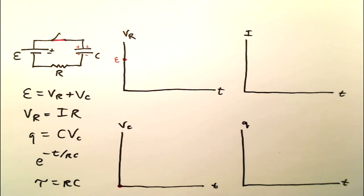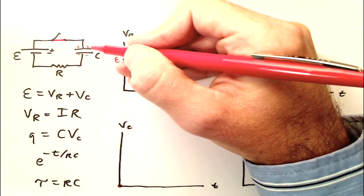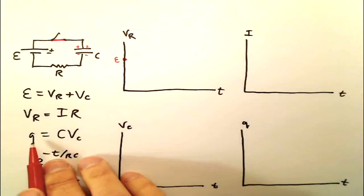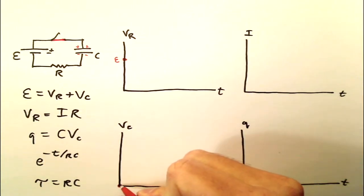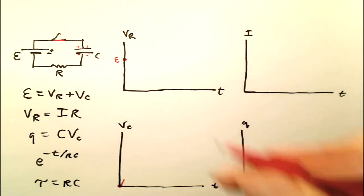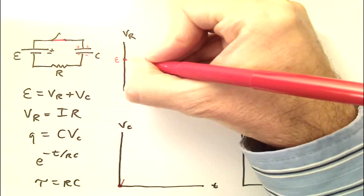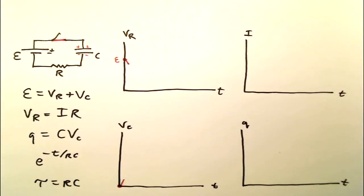What happens after t equals zero? As the current flows, charge begins to build up on this capacitor, and the more charge you have, the more voltage you have, so the voltage is going to start to increase on the capacitor. The sum of VR and VC must be a constant, so then the VR must decrease exactly the same amount that the VC increased.